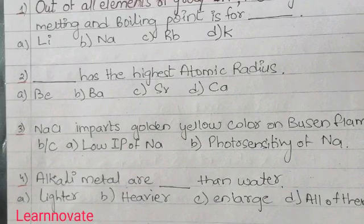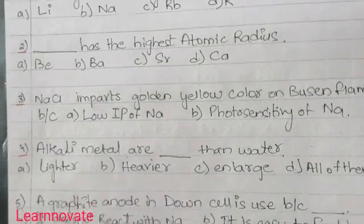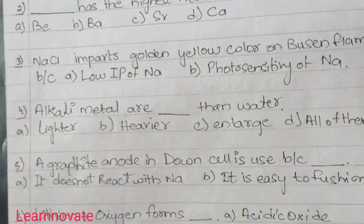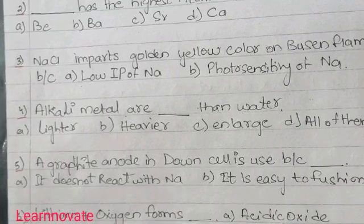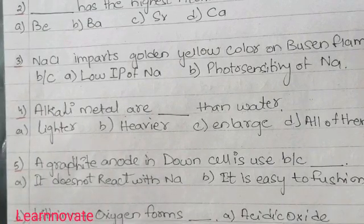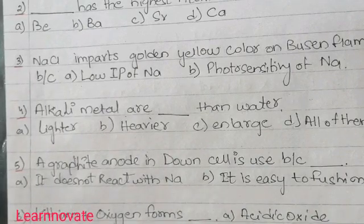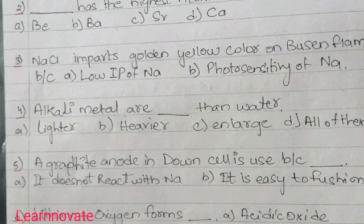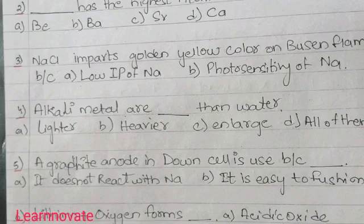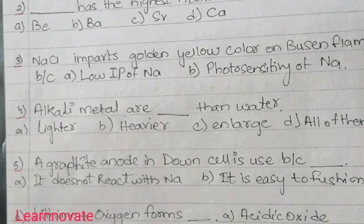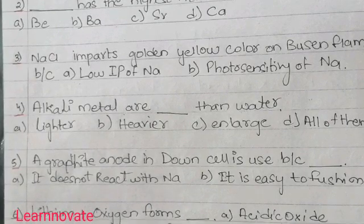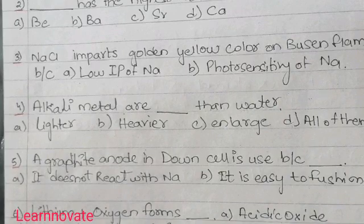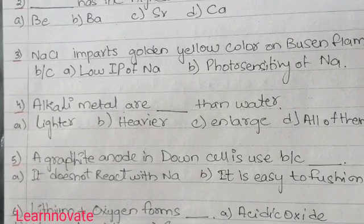Question number 6 says: lithium plus oxygen forms dash. When you combine lithium with oxygen, it forms an oxide called lithium oxide. The question asks: is it a basic oxide, a normal oxide, a superoxide, or a peroxide? You have to determine whether lithium oxide is a normal oxide, superoxide, peroxide, or otherwise. You need to know the charge number and the types of oxides that alkali metals form.